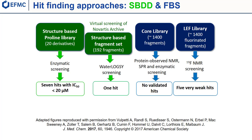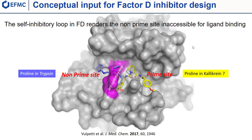We decided to synthesize a library around the pro-link scaffold. Pro-link-based inhibitors are very well known in the protease field; most of them bind towards the non-prime site in addition to the S1 pocket. Here you see an example, shown in violet, of a pro-link derivative bound to trypsin, another protease. But the self-inhibitory loop of factor D renders the non-prime site inaccessible, so incompatible with this binding mode. The in-house solved X-ray structure of a pro-link derivative bound to another protease, calicarin-7, shown in yellow, provided a very attractive conceptual input for factor D library design, because the calicarin-7 proline binding pose towards the prime site was considered compatible with the topology of the factor D active site.